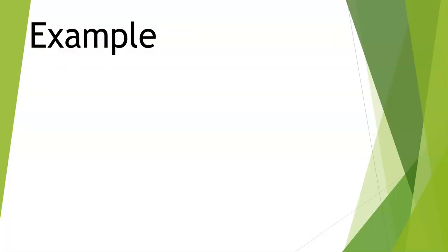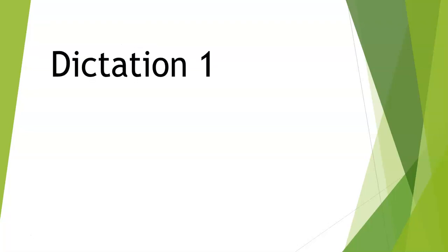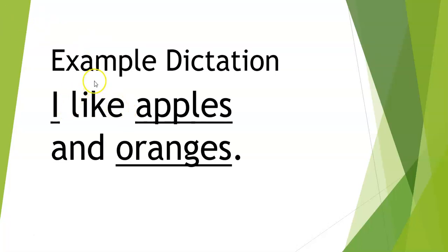This is an example of what we are going to do today. I like apples and oranges. So in this example, you would write 'I like apples and oranges' and then you can underline I, apples and oranges — because I, apples and oranges are people and things.